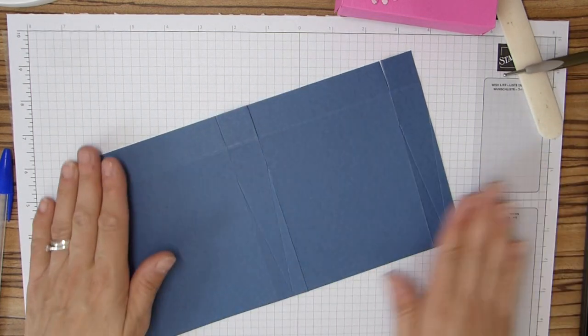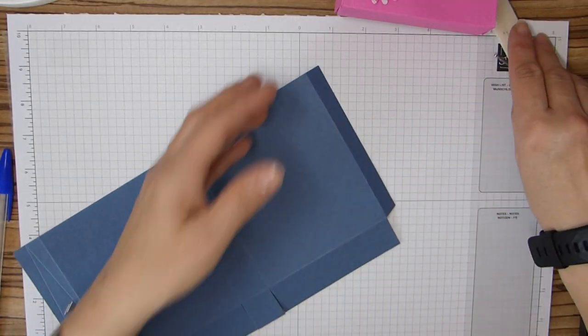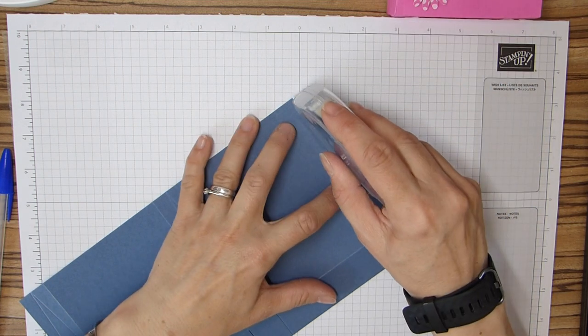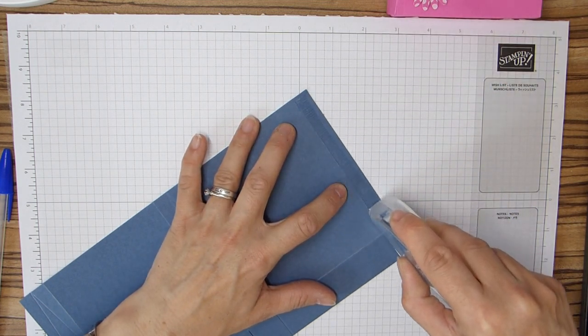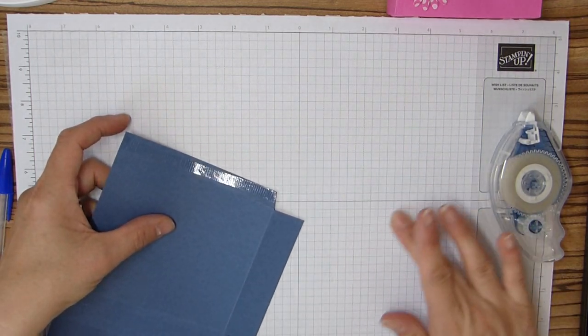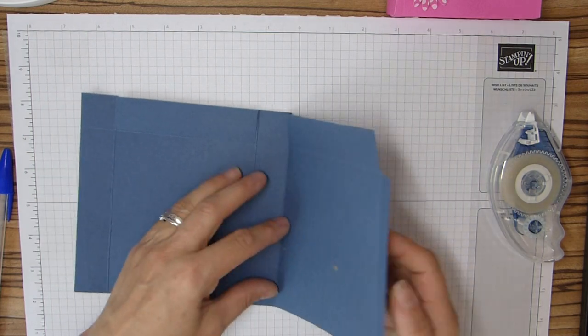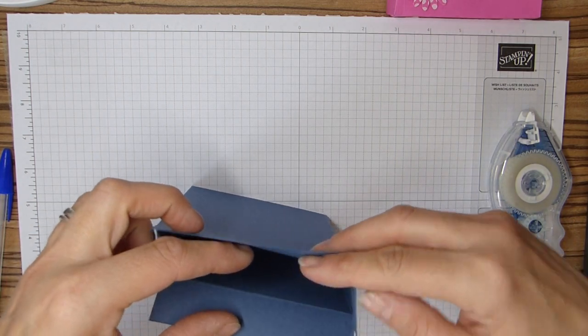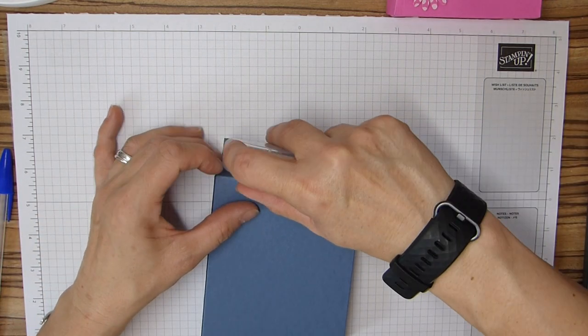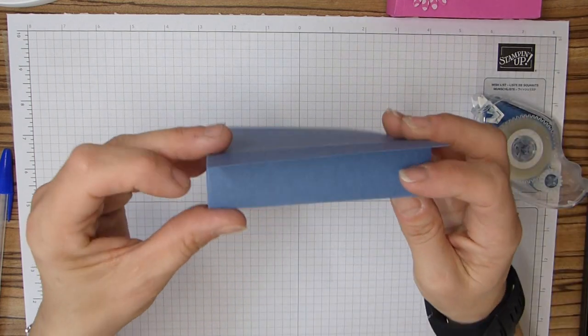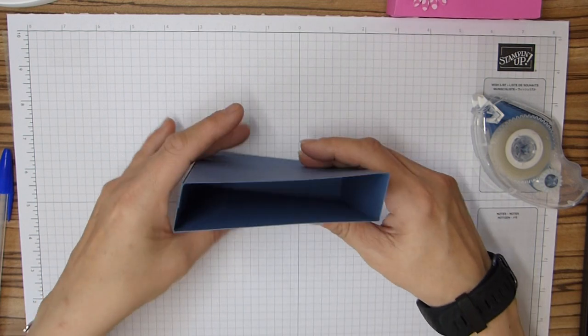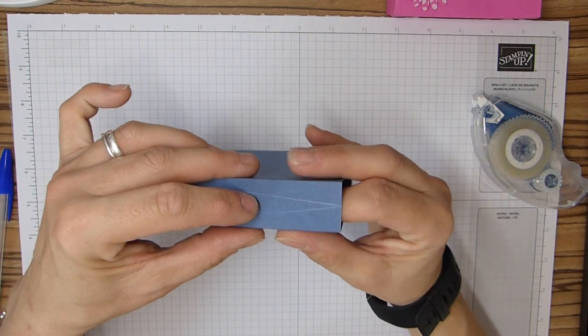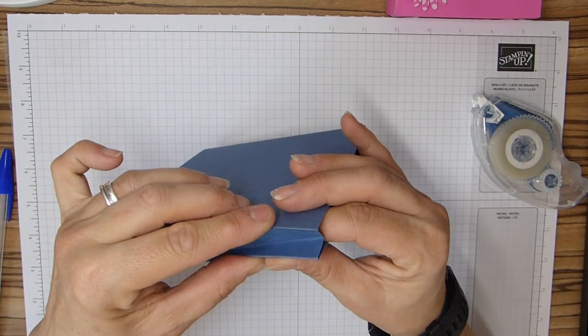And then once you've done that, we can then pop this little bag together. So I've got my Seal Plus here, just to run down this tab. Just caught the end there. I'm just going to fold that over and that onto it, tuck those bottom pieces in there, and again run my Seal Plus across.